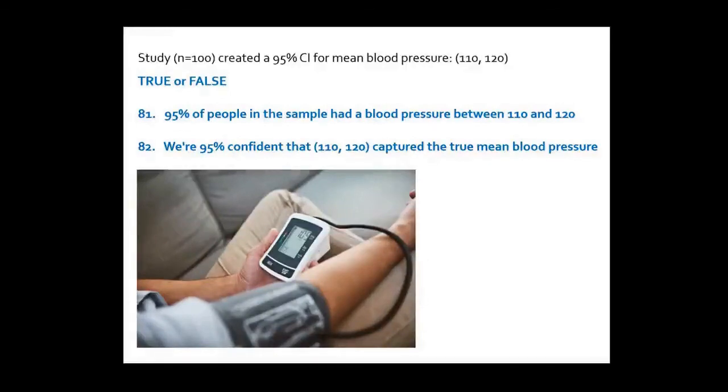So let's see if that was clear. So I did a study, and based on that study I measured blood pressures from 100 people. I calculated a mean for these 100 people and I calculated a 95% confidence interval. So this is the interval that you see here. So which of these statements is now true or false?